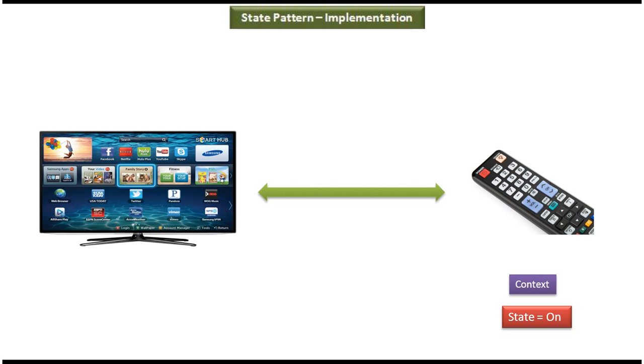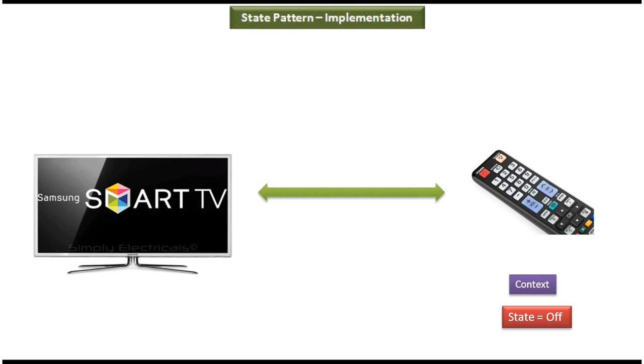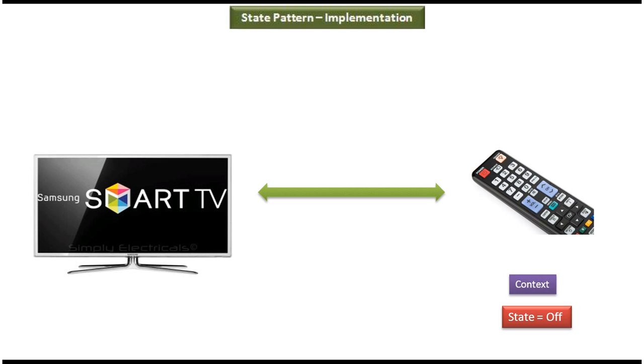Now we will see the scenario where we can use state design pattern. TV remote control is the best example. Using a remote control you can switch on the TV or switch off the TV. The remote control internally maintains some state — either on or off. If the state is on, it will switch on the TV; if the state is off, it will switch off the TV.